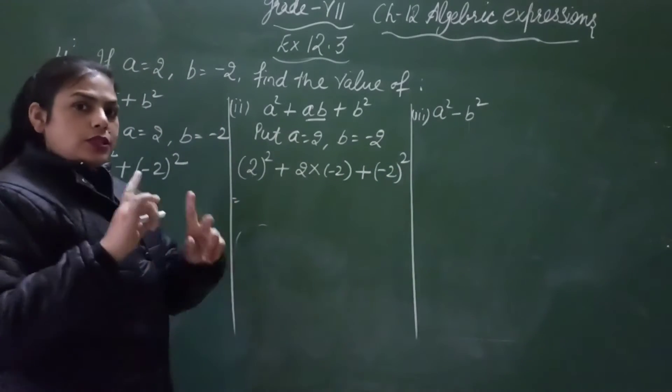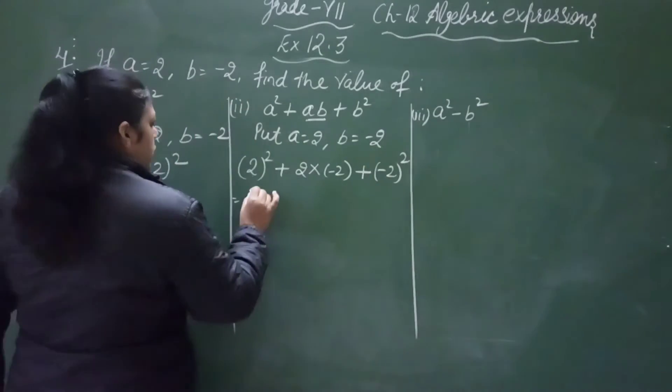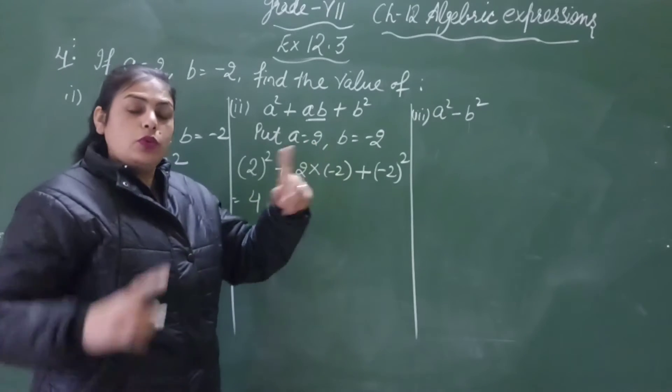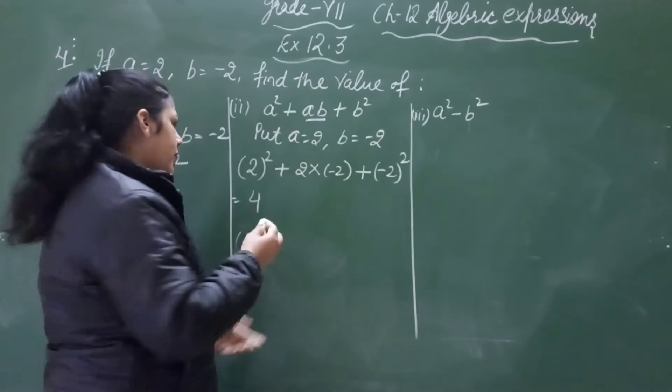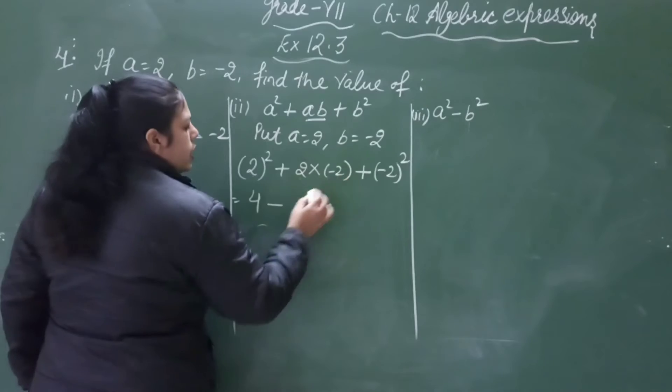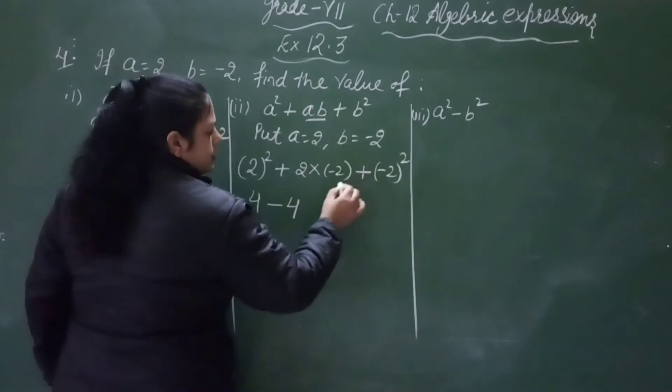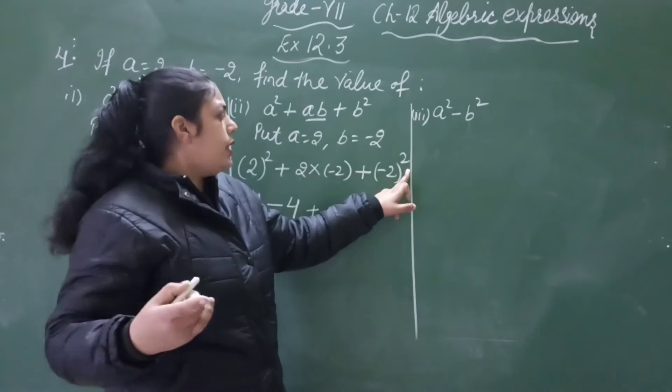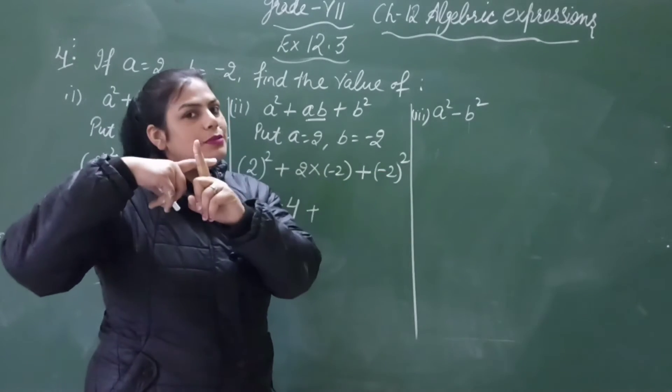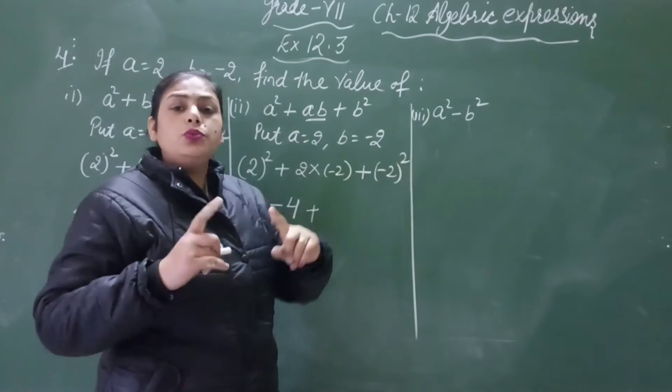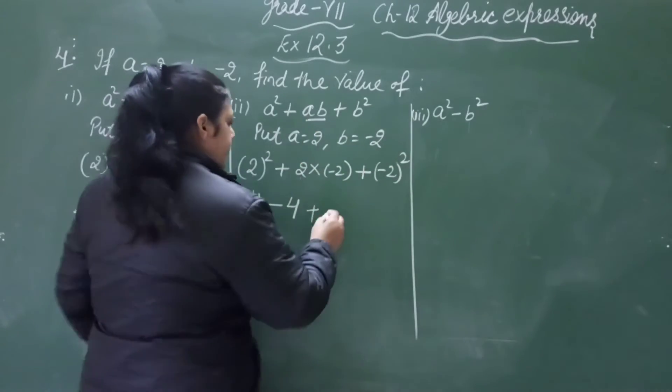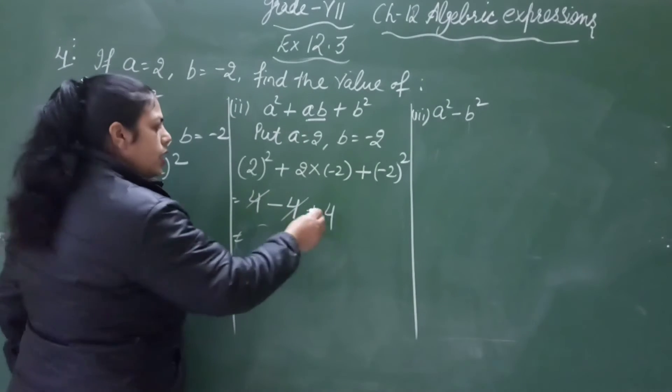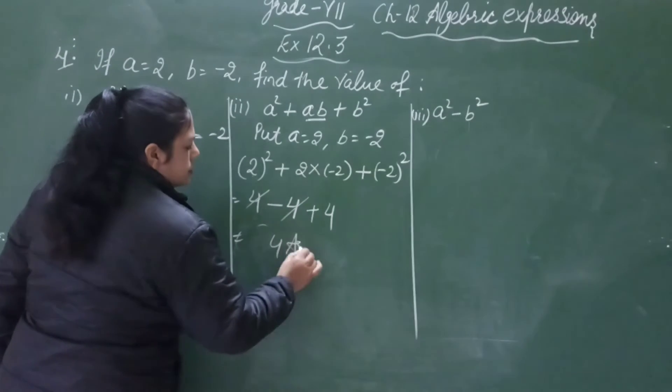So now 2 square means 2 twos are 4. Plus minus, one is positive, one is negative, so plus minus is minus, and 2 twos are 4. Plus, now it's a negative number but its power is even, so minus times minus becomes plus, and 2 square, 2 twos are 4. So we have 4 plus minus 4 plus 4, which equals 0. Then 4 is our answer. Clear?